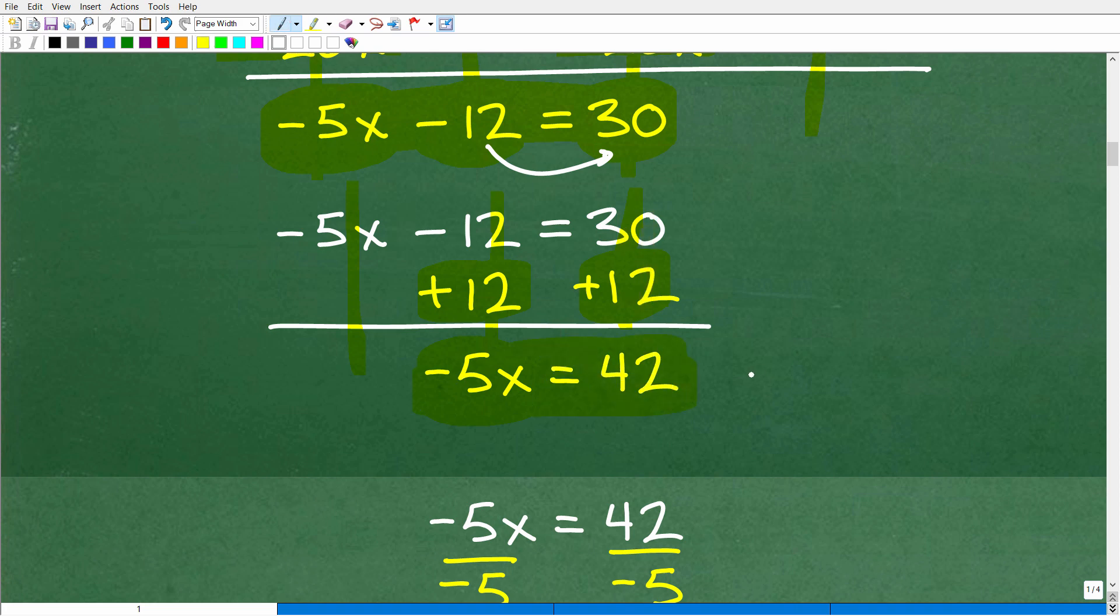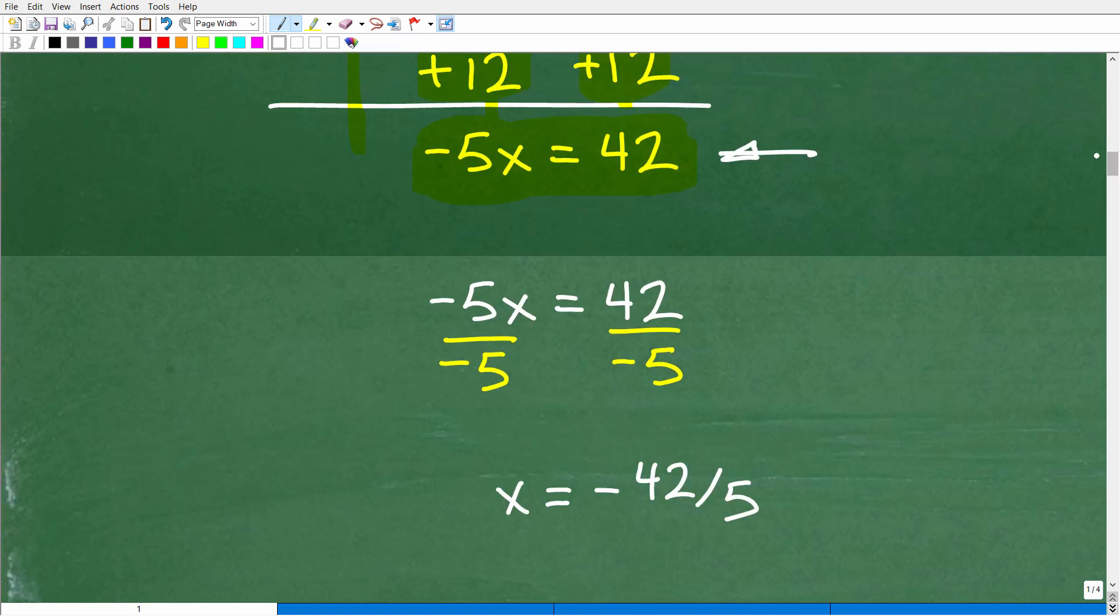And at this point, we're left with this lovely one-step equation. So let's go ahead and solve for x. And to solve for x, all we need to do is divide both sides of the equation by -5. And we get x = -42/5.